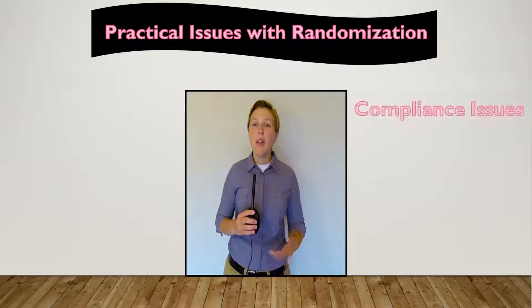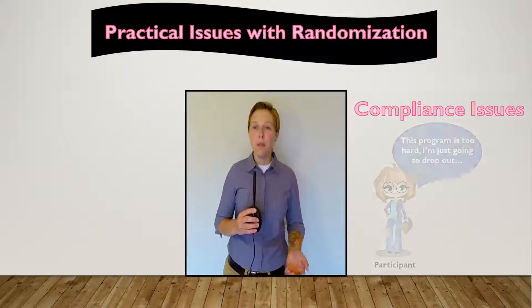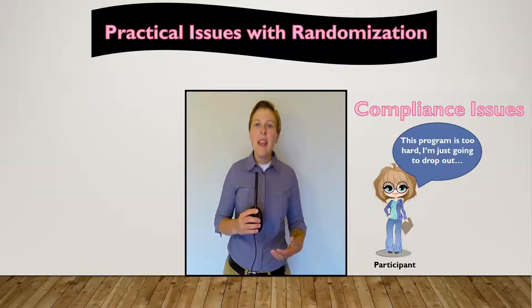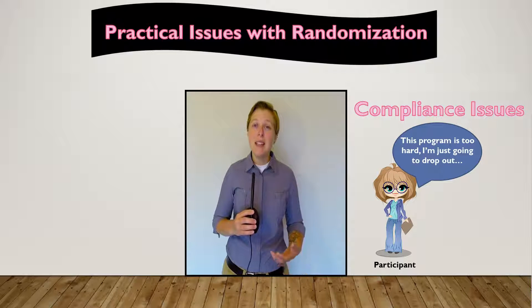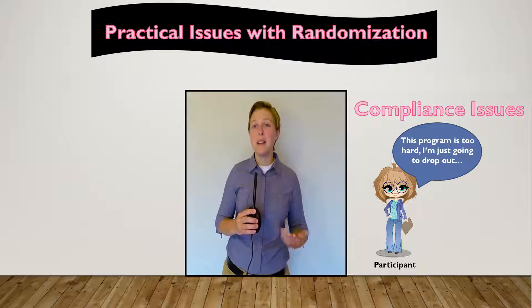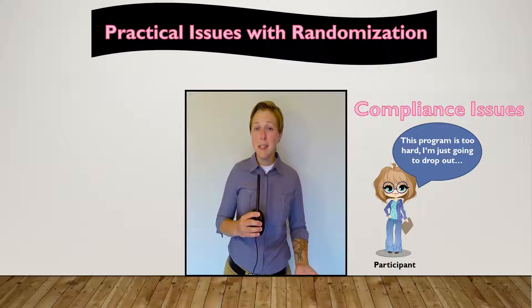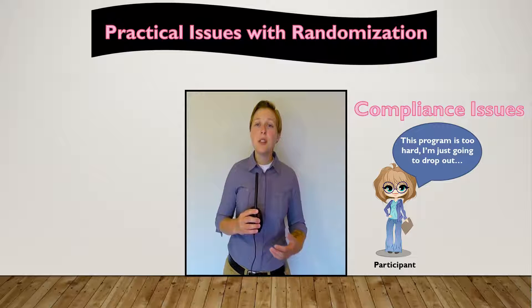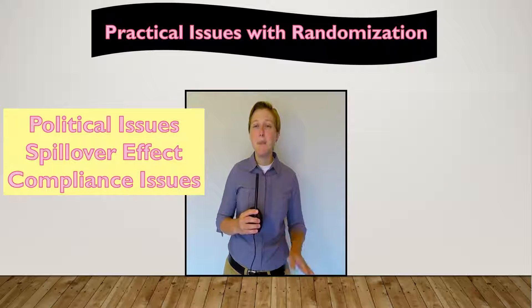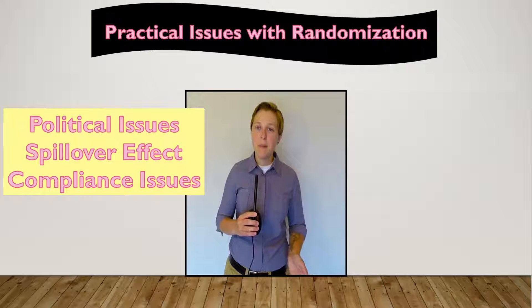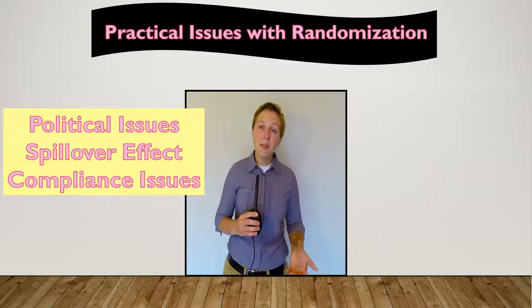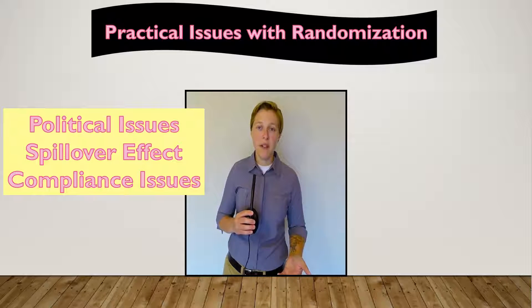Compliance is also a large problem with randomization. If the career training program is difficult, then perhaps lazier people, people with less earning potential, may drop out of the study. These are just some complications of implementing this simple randomization scheme to estimate average treatment effect. In future videos, we will discuss other methods to estimate an average treatment effect, which attempt to address these practical concerns with randomization.